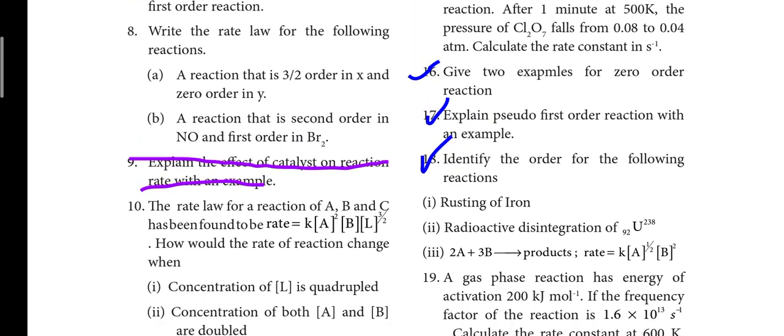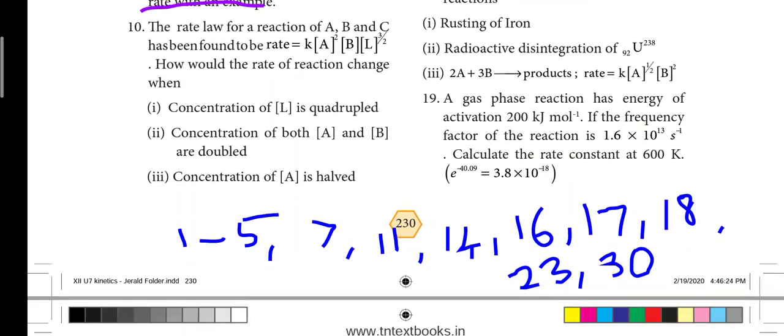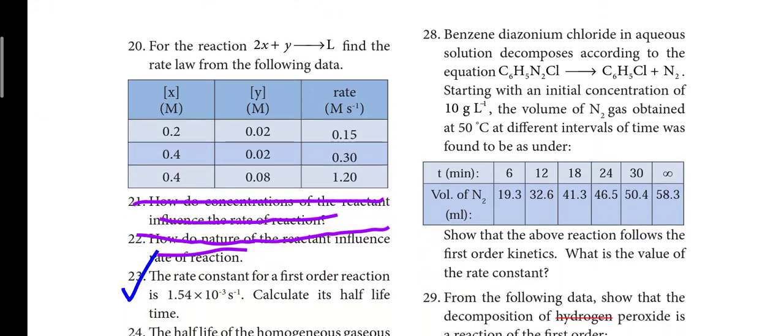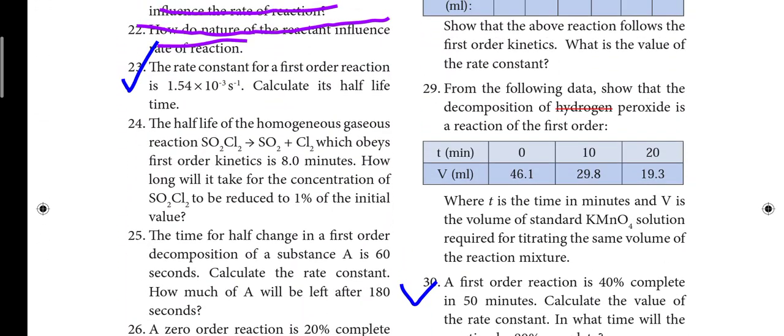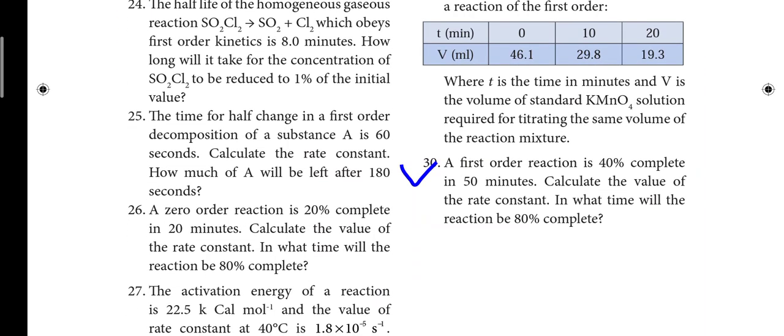Next, 17th question: pseudo first order reaction — it is an important 3 mark question. 18th question, 1 mark: identify the order — rusting of iron, radioactive disintegration, 2A plus 3B gives product. 23rd question: calculate the half life time — half life time based on the problem, important.